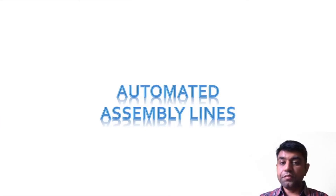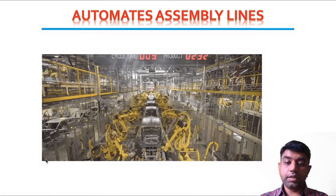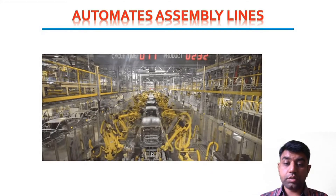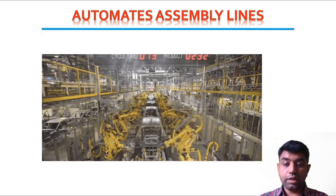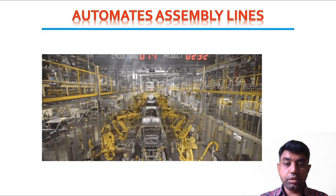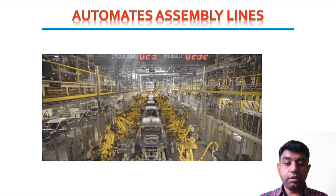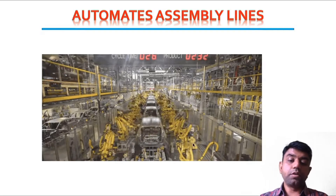Now let us talk about the automated assembly line. Instead of human workers, robotic or robot technology mechanisms perform the task of assembling components together. When that concept is applied, it is called an automated assembly line. Multiple robot mechanisms are used, and the object travels from one machine or robot to another — that is the assembly line concept using robot technology instead of manual labor.